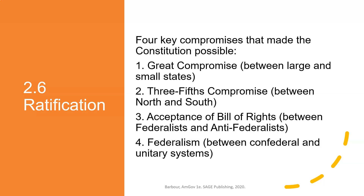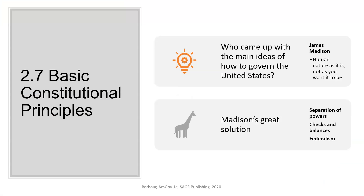The early founders were so concerned about the people overthrowing the system that they purposely made even the new system not quite as strong in the central government because they were afraid of being overthrown. Madison was really the founding father for the idea of separation of powers, the checks and balances, and our federal system — he was the one who really came up with this idea. His notion of human nature, derived from John Locke, was really one of the founding principles of how we were to govern.